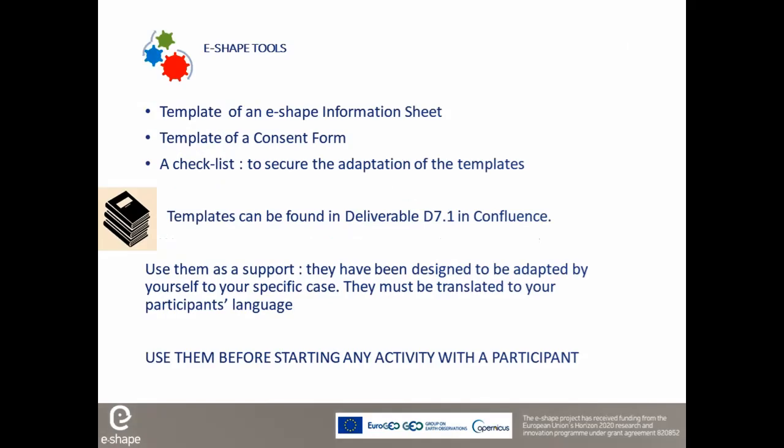Based on the ethics questionnaire sent in September, it seems partners have not yet used or developed such forms. You will find a template of an e-shape information sheet and a template of a consent form in deliverable D7.1 in Confluence. Use them as a support — they have been designed to be adapted to your specific case, and there is a checklist to secure the adaptation. Don't forget these templates must be translated into your participant's language to be fully understood. Use them before starting any activity with a participant.